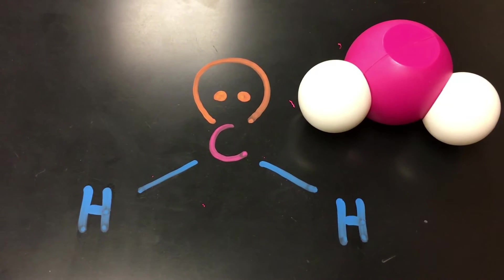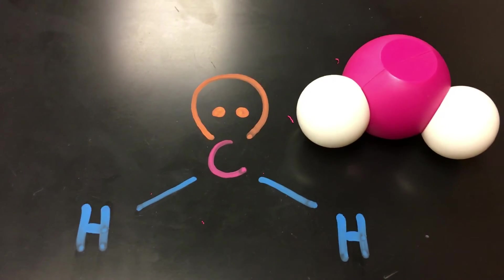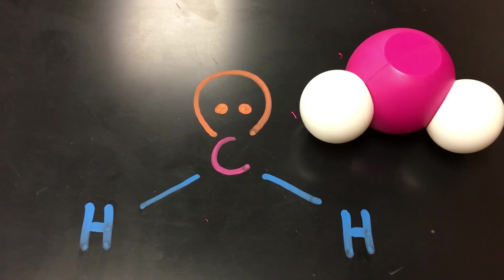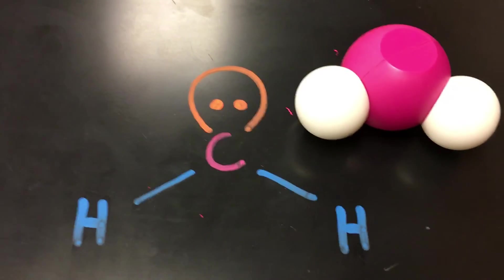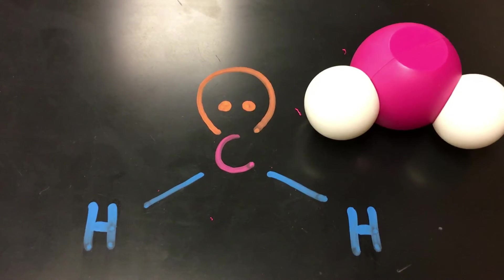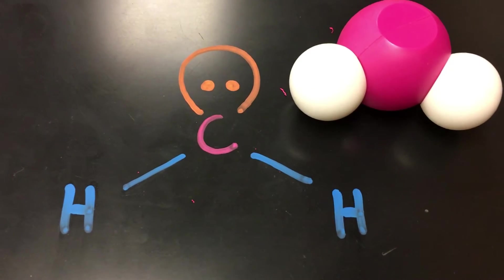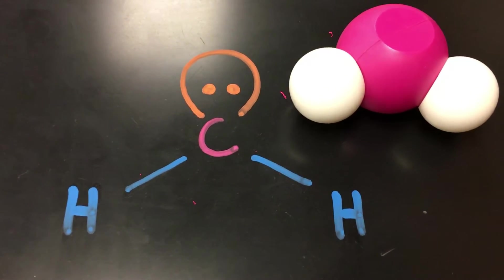So the two things that affect molecular shape are going to be bonded atoms that are covalently bonded to the center atom and lone pairs of electrons that are also on that center atom. Okay it's not just one or the other.